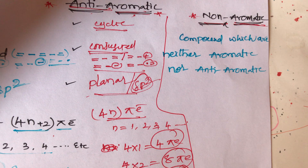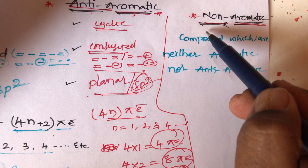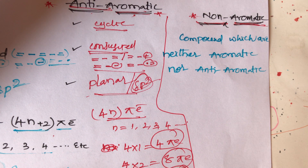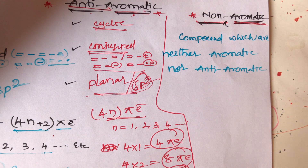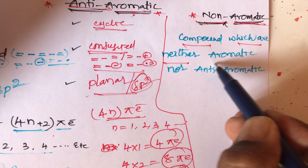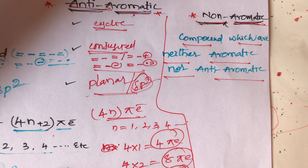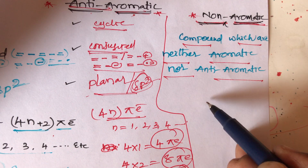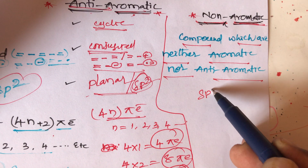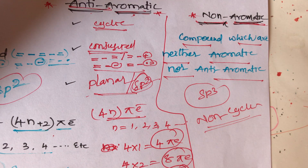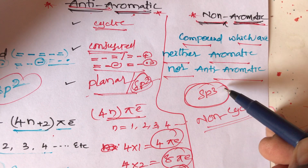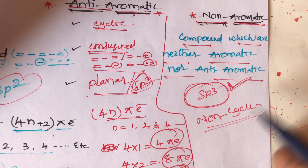What is non-aromatic? Non-aromatic means the compound is neither aromatic nor anti-aromatic — both conditions are absent. That means cyclic structure is absent, no planar structure, and the compound undergoes SP3 hybridization. A non-cyclic system with SP3 hybridization is always non-aromatic.